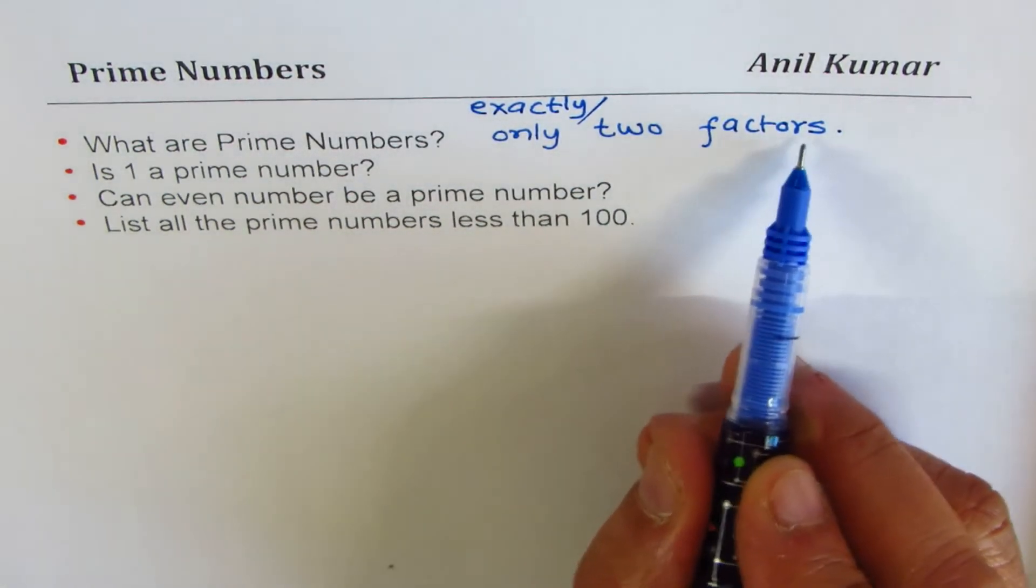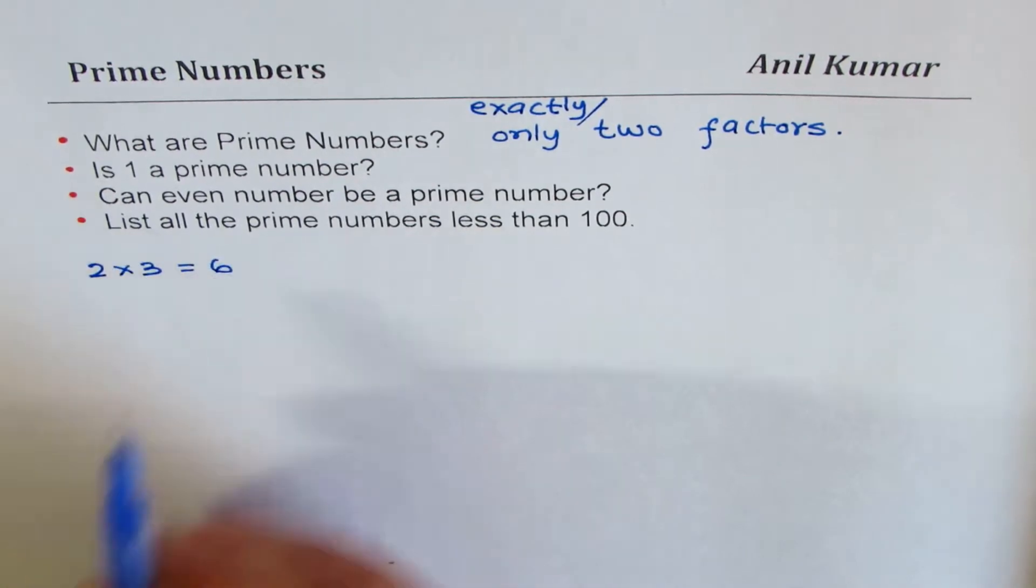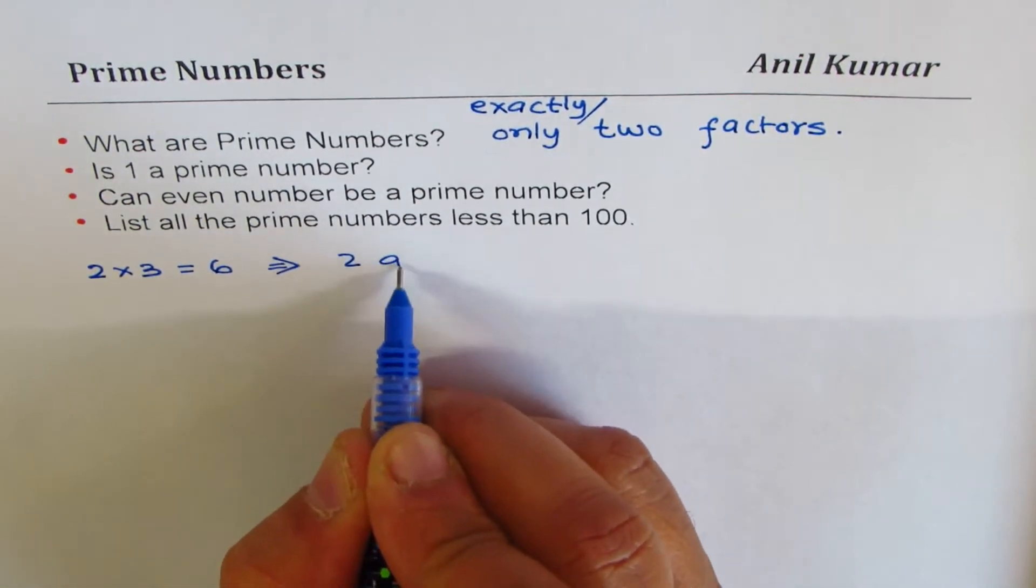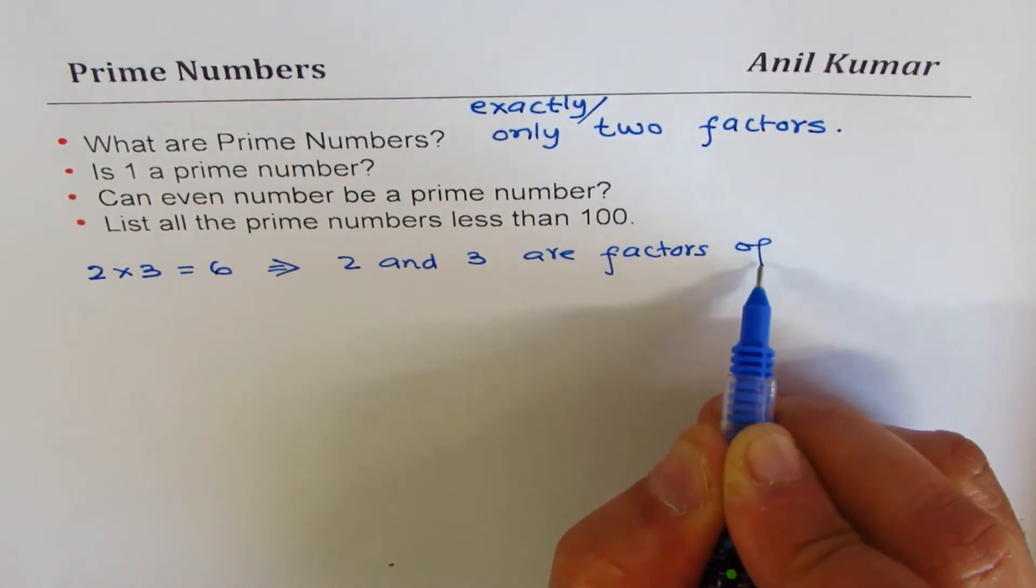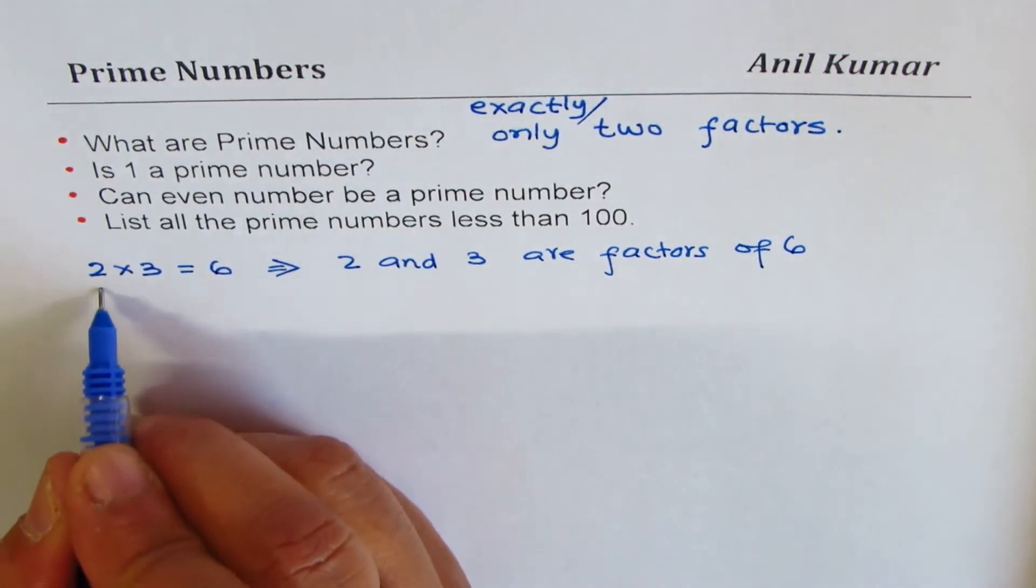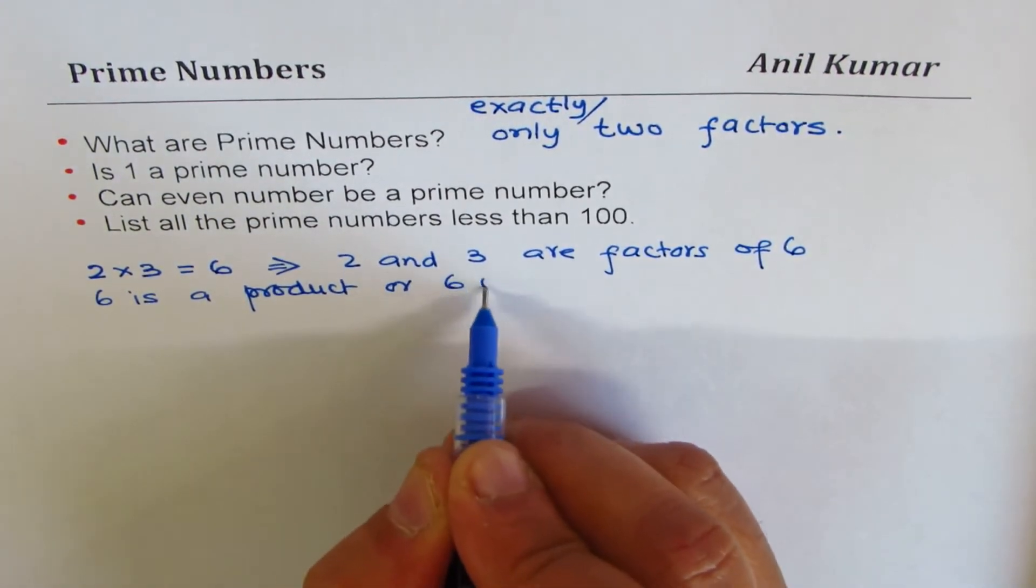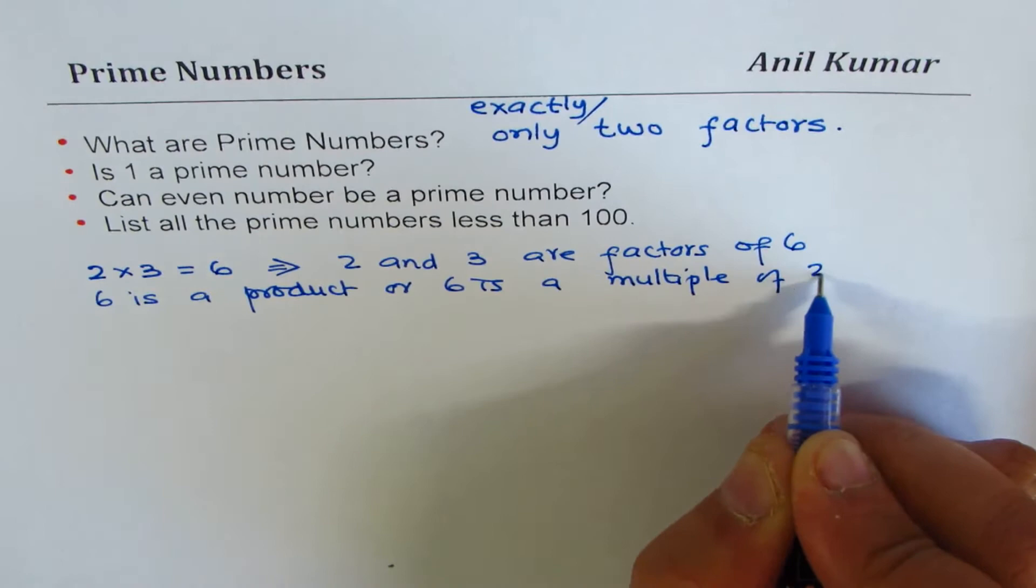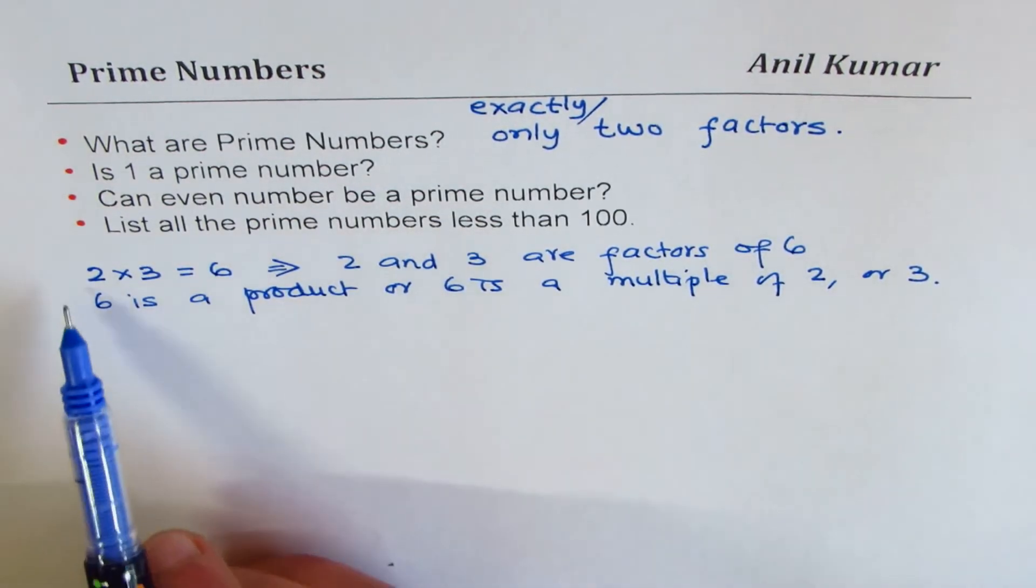Now what are factors? Let's try to understand. If I write two times three equals to six, that means two and three are factors of six. So we say six is a product, or you can say six is a multiple of two or three. So factors are numbers which multiply to get you the number.